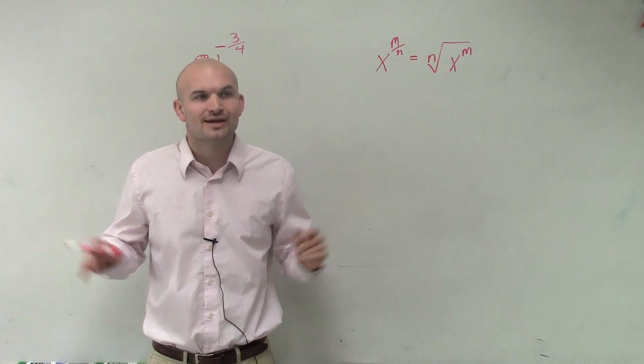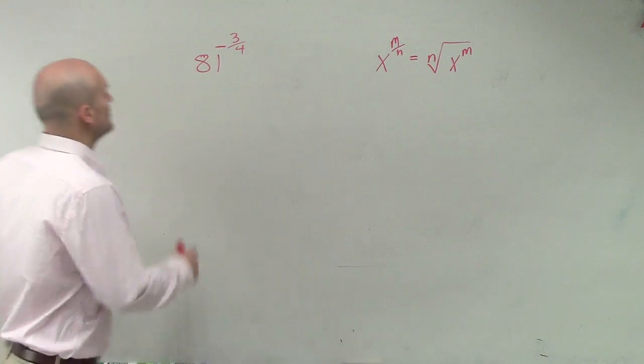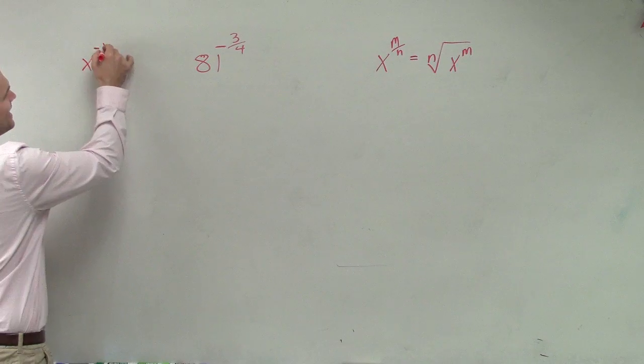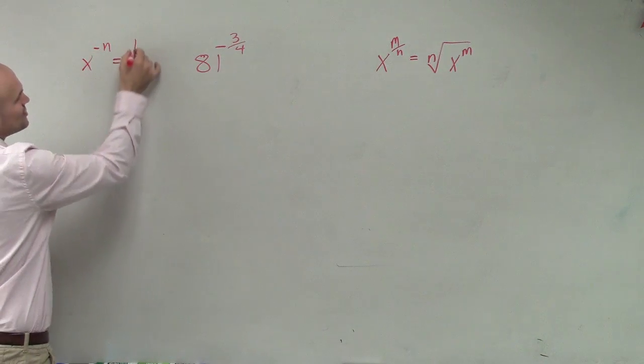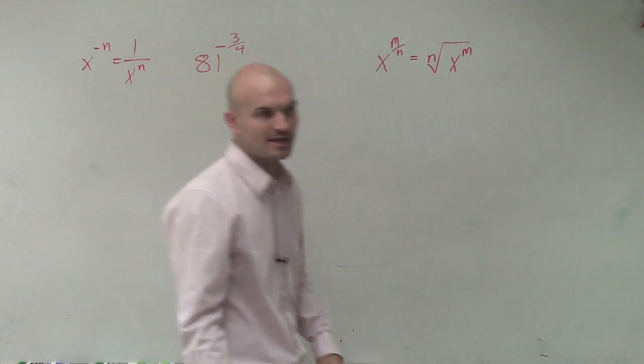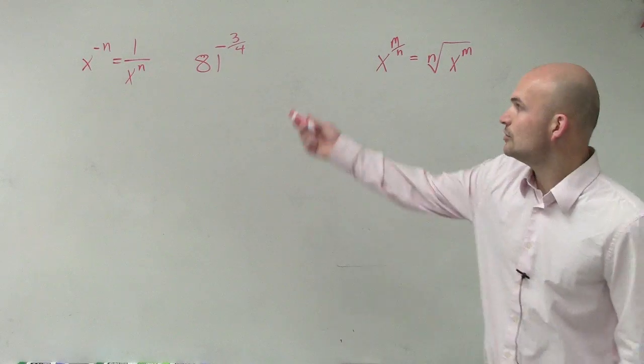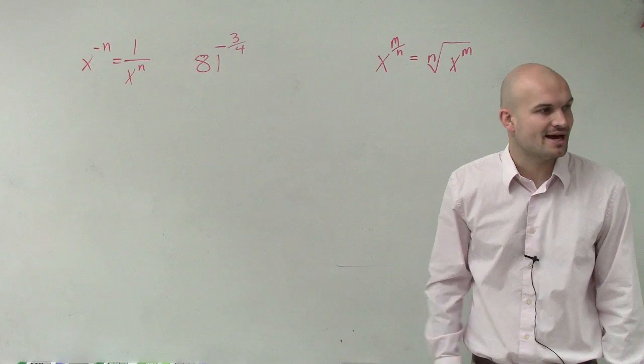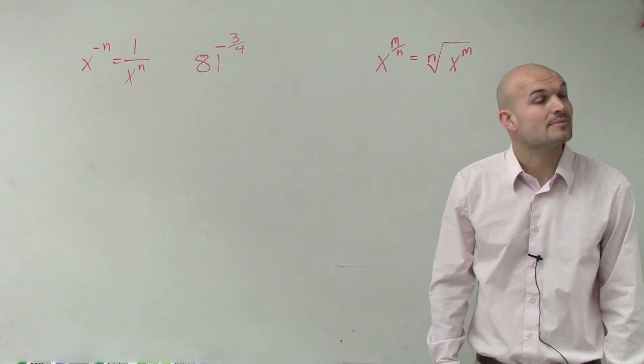How about we get rid of the negative exponent? Remember, x to the negative n is equal to 1 over x to the n, right? By using your rules of exponents, you know if you have a negative exponent, you can rewrite that as your power in the denominator.